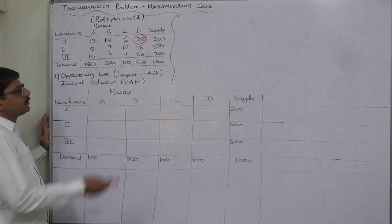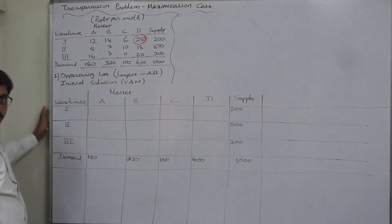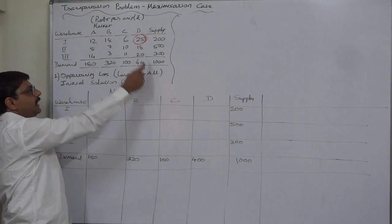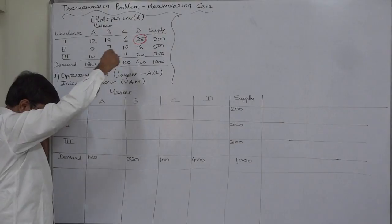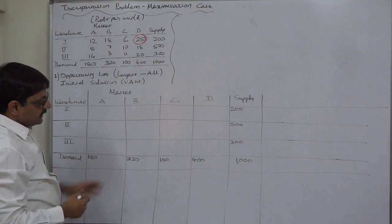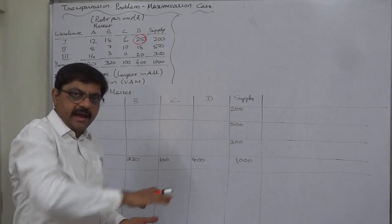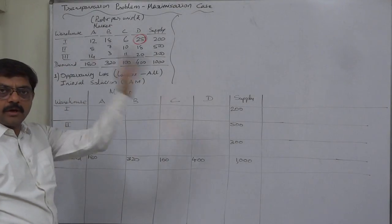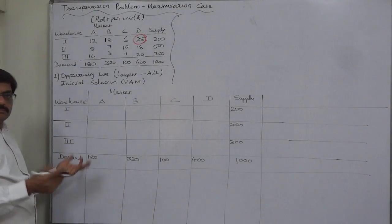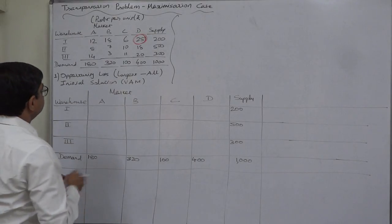So we just need to prepare the opportunity loss matrix or opportunity loss transportation table, and for that purpose we have to subtract all the values of profit or sales or whatever from the highest one. Let us do it, and then we will solve this problem according to the minimization technique.